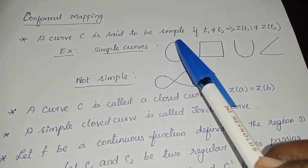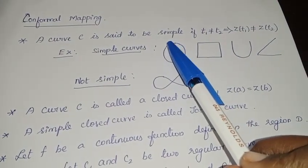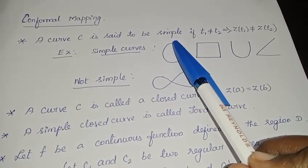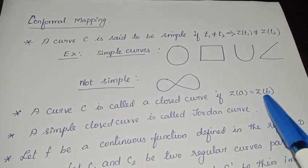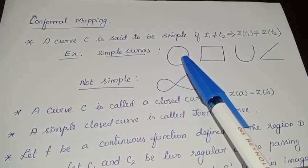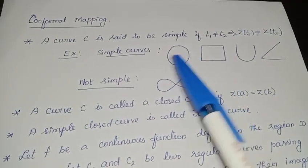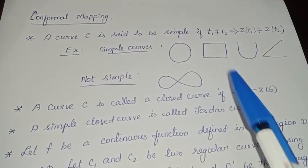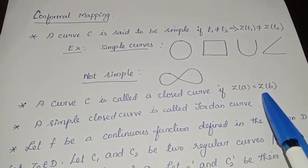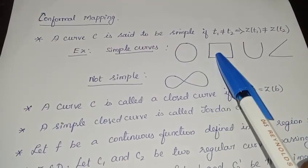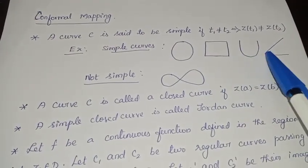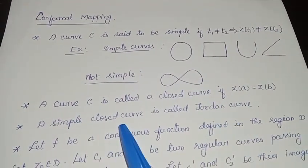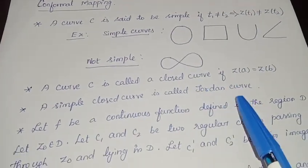When you look at this curve, if you start tracing from here, the beginning and the end points have the same value — that is z(a) equals z(b). That type of curve is called a closed curve. Simple means it does not have any intersection. Simple closed means it does not have any intersection except at the beginning and ending of the interval. These are simple closed curves, whereas this is simple but open, and this one is not simple. A simple closed curve is otherwise called a Jordan curve.